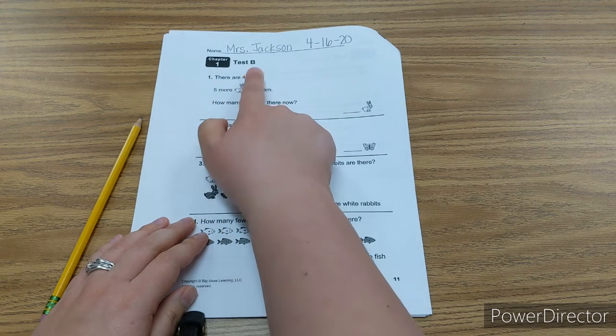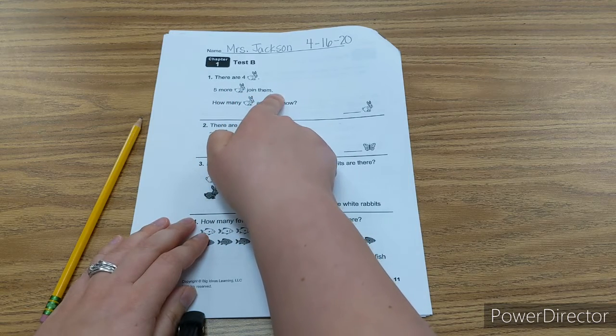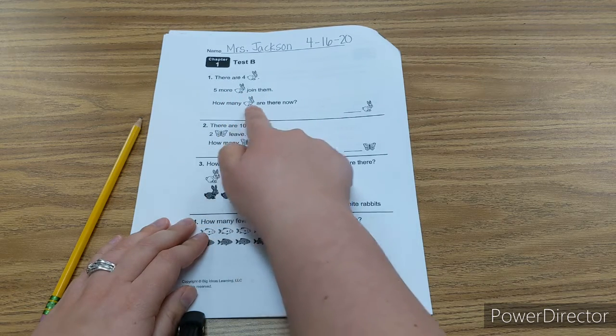Number one. There are four bunnies. Five more bunnies join them. How many bunnies are there now?